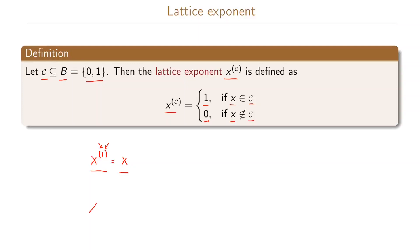If we instead had the lattice exponent x^{0} here, this will always be equal to the complement of x, because if x is 1, then 1 will not be in this set, so we will have 0. If x is 0, 0 will be in this set, so we will have 1. So this lattice exponent is the complement of x.